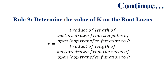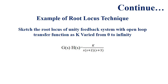Rule 9 is the determination of the value of K on the root locus. The value of K is the ratio between the product of lengths of vectors drawn from the poles of the open-loop transfer function to point P, and the product of lengths of vectors drawn from the zeros of the open-loop transfer function to point P.